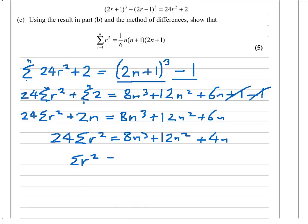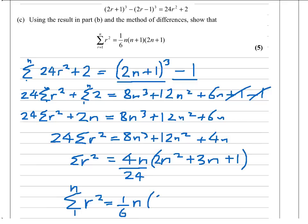So the sum of r² is... first of all, notice I can pull out 4n. That leaves me with 2n² plus 3n plus 1. And I've divided by 24. The sum of r² from 1 to n equals 4 over 24, which is one-sixth n, and then this factorizes to give me (2n+1)(n+1), which is exactly what they wanted me to show.